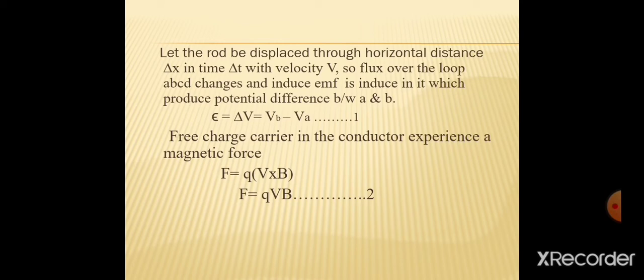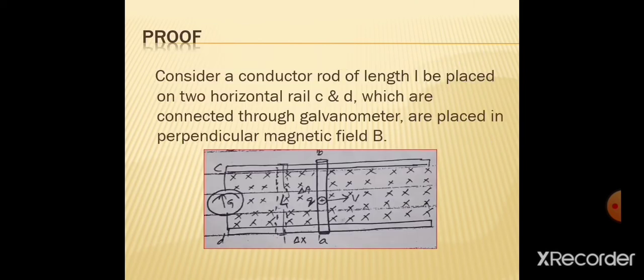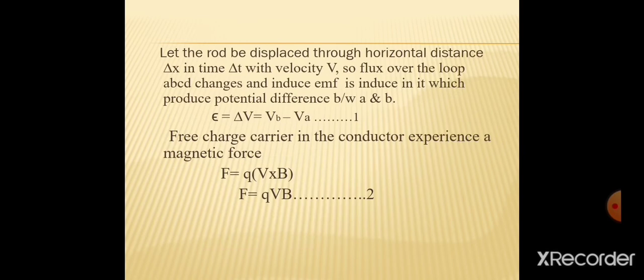جب ہم cross product کو expand کریں گے تو sine θ آئے گا۔ چونکہ یہ perpendicular magnetic field ہے، اس لیے angle = 90°، اور sin 90° = 1۔ تو equation number 2 آئے گی: F = qvB۔